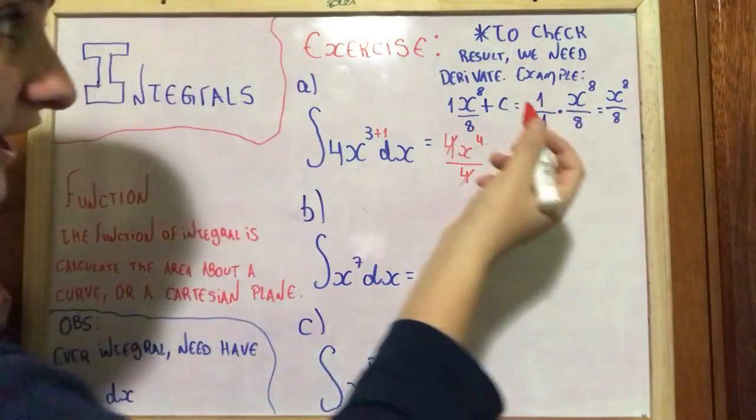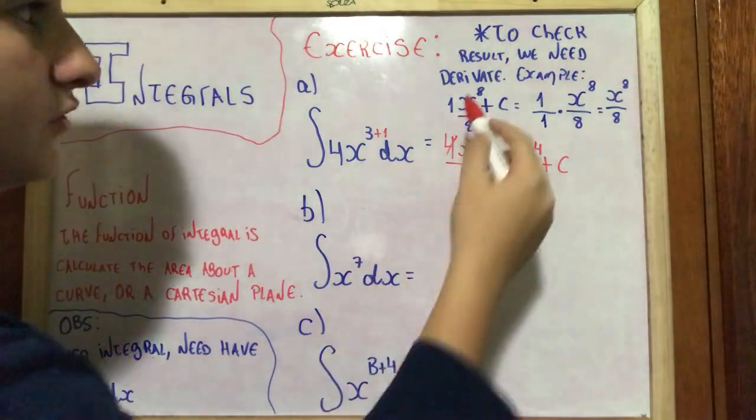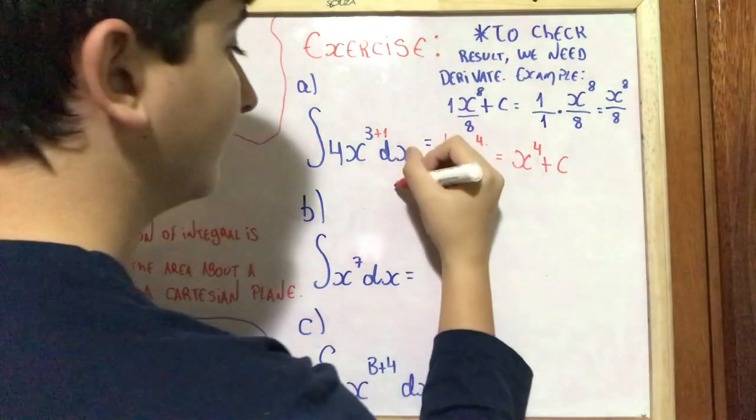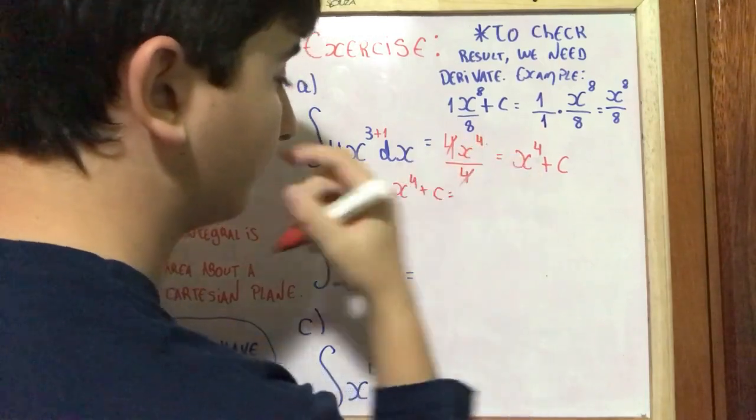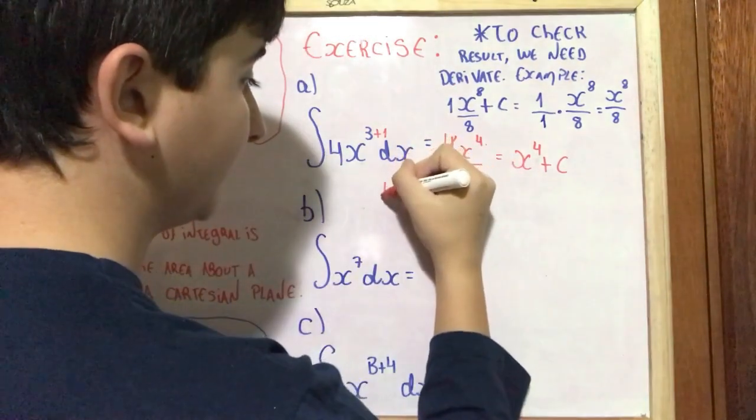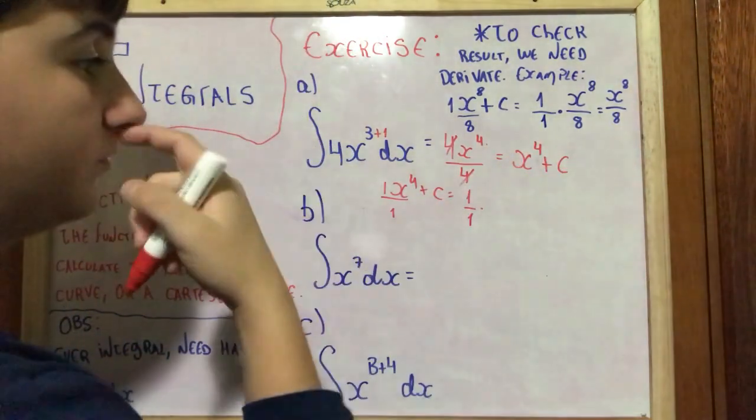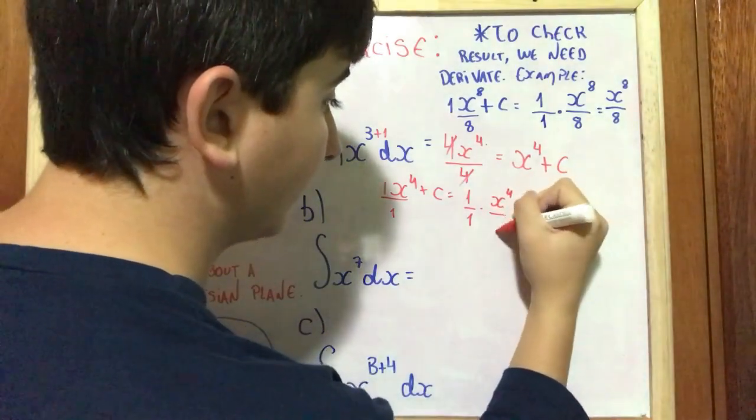To check the result, we need to derive it. Let's go derive this exercise. X⁴ plus C is equal to, we need to imagine 1 here and 1 here, and 1 divided by 1 multiplied by X⁴ divided by 1 is equal to X⁴.